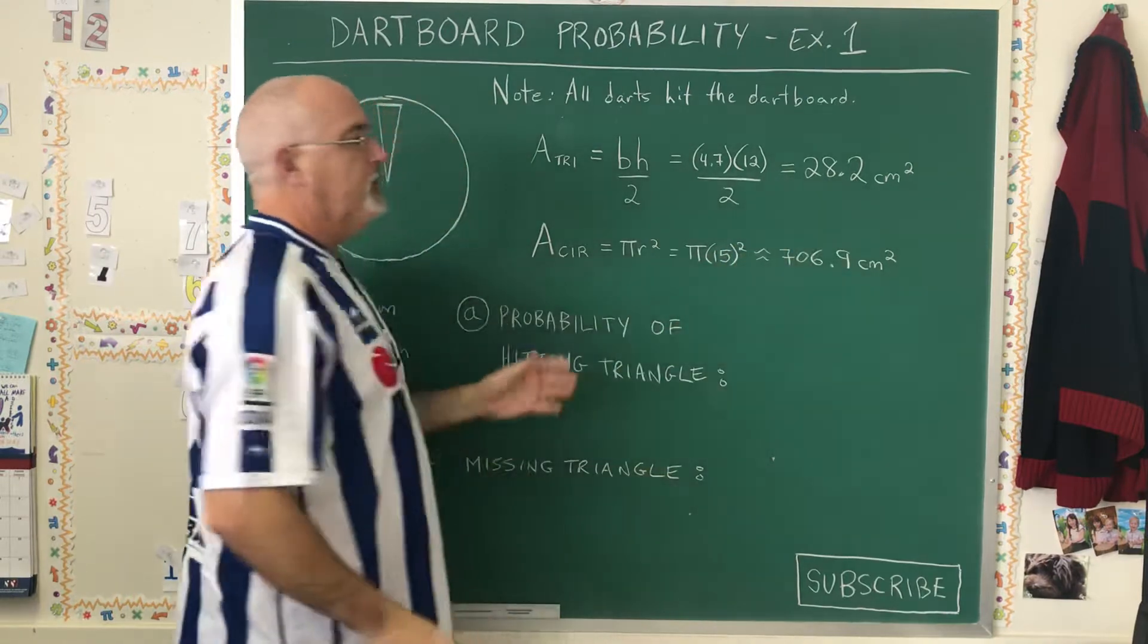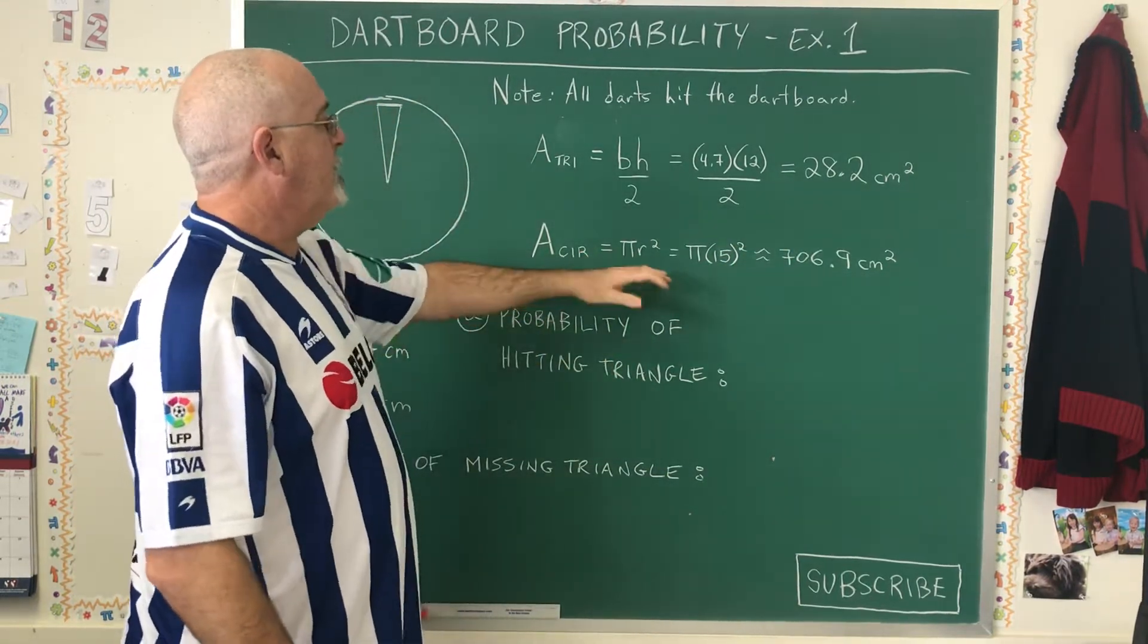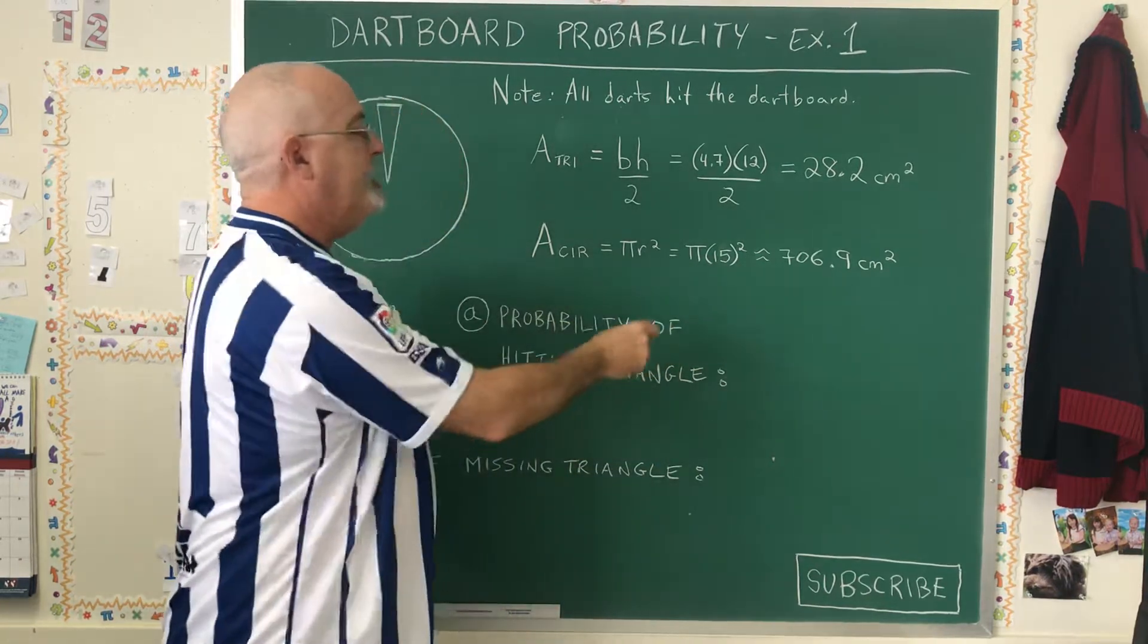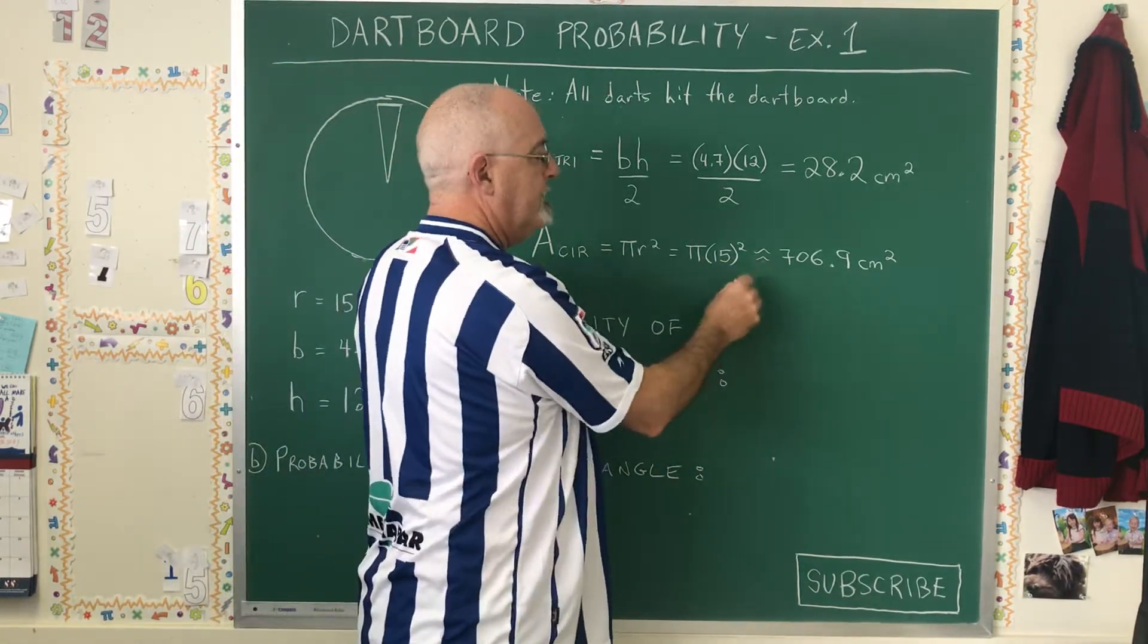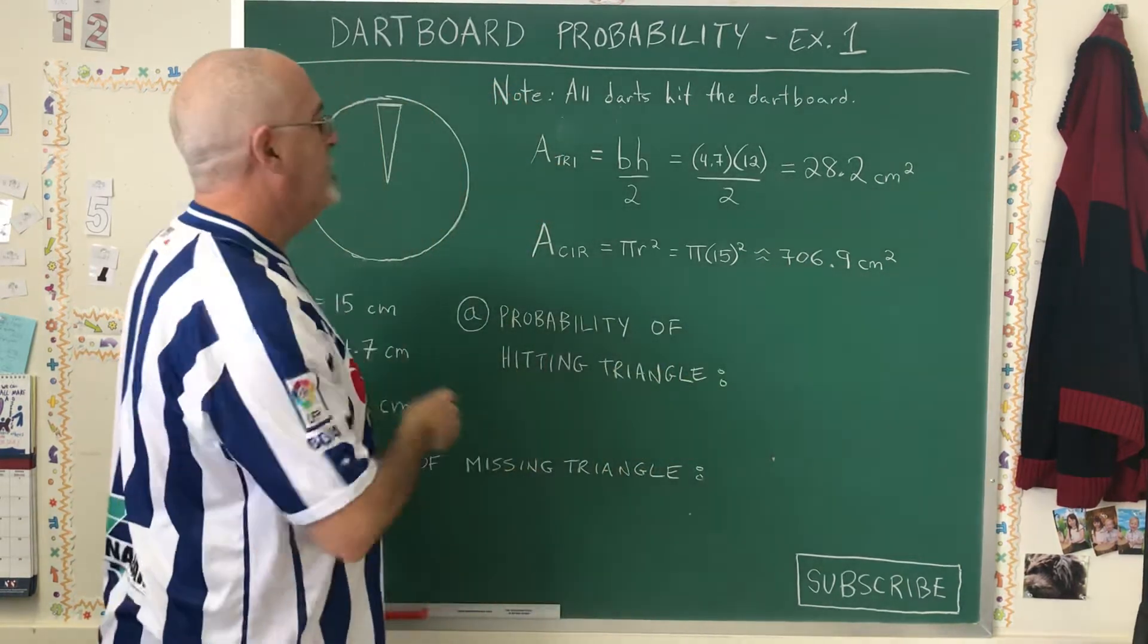For the area of the circle, we have pi r squared. The radius is 15, so we end up with an approximate area of 706.9, because I had to round the answer.